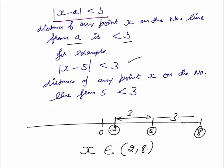For example, point 1 on the number line is at a distance less than 3 from 5. All real numbers between 2 and 8 are at a distance less than 3 from 5. So the range of X is the open interval (2, 8) — any real number between 2 and 8, not including 2 and 8. That is the practical meaning of modulus of X minus 5 less than 3.